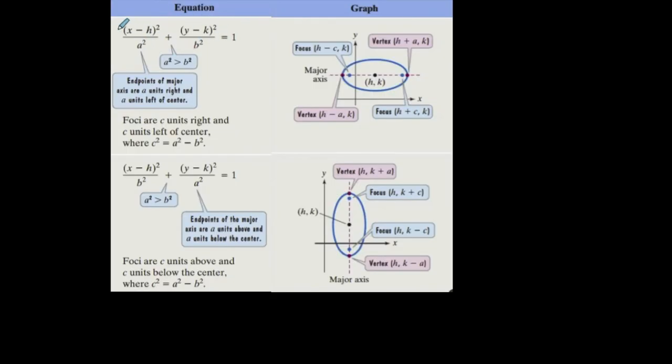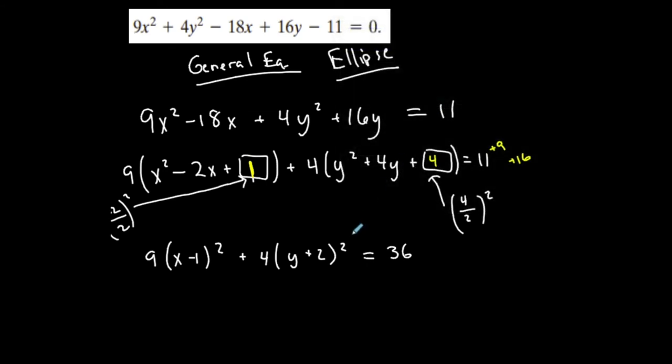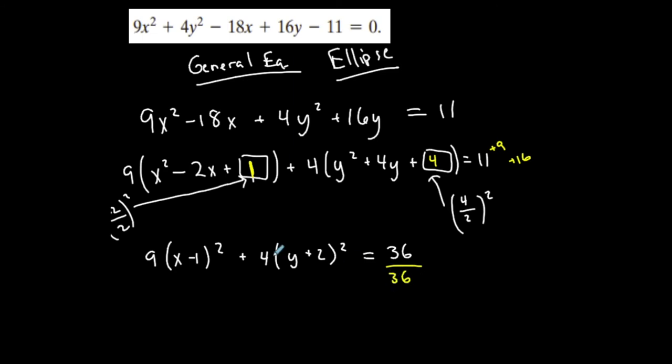I don't have coefficients in front of these, I need them in denominators and I need a 1 on the right hand side. To do that, everything is going to get divided by 36 to make that 1 on the right hand side.